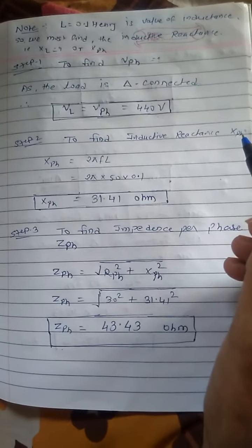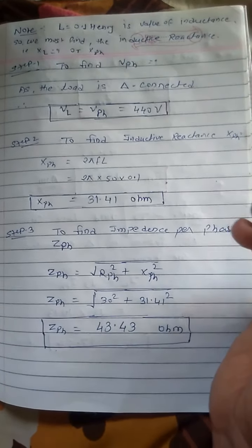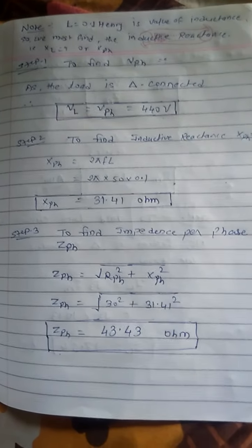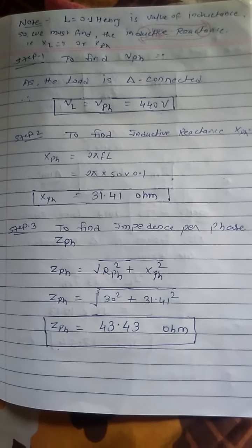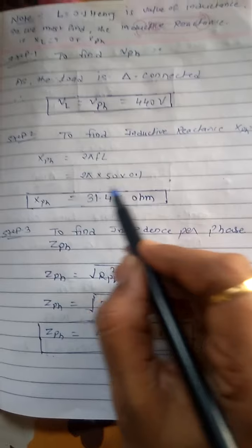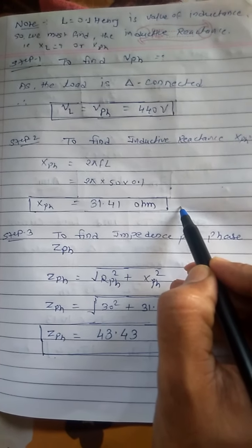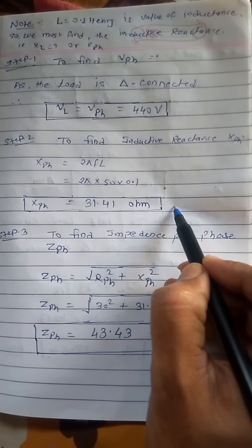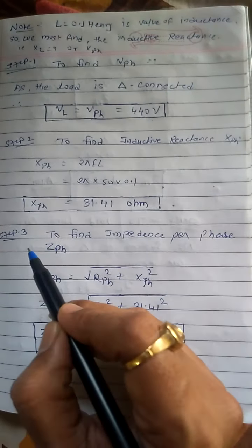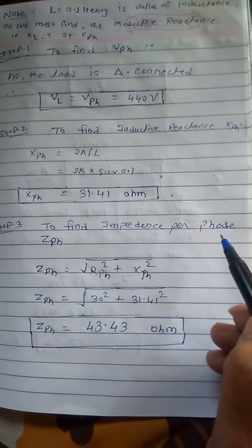Step 2 is to find inductive reactance XL. The formula is XL = 2πfL. Here L = 0.1 henry is the value of inductance. Substituting the values, we get the inductive reactance per phase.